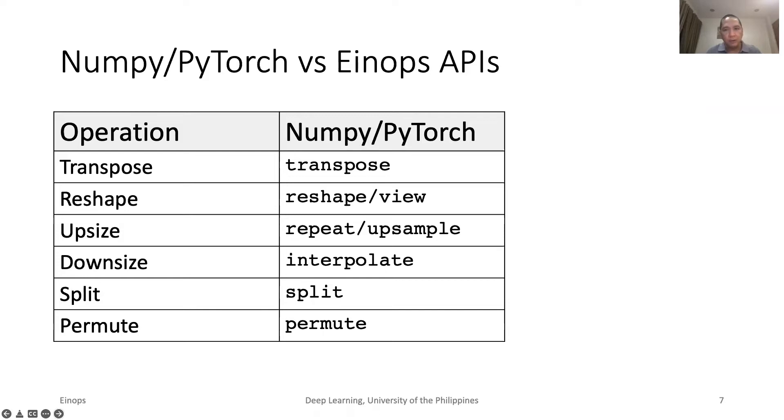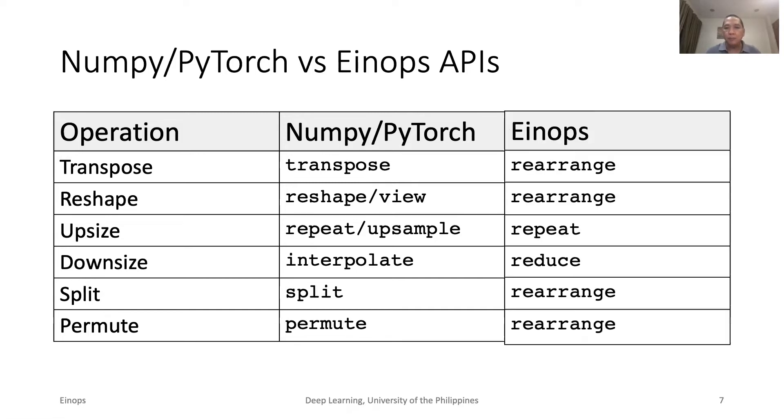This table shows the different tensor operations and the respective function names in NumPy or PyTorch. For NumPy or PyTorch, we have to remember all these names and syntax. Meanwhile, for EinOps, these functions are replaced by three functions: rearrange, repeat, and reduce. Sometimes, multiple operations in Torch like view plus permute can be replaced by a single call to rearrange.